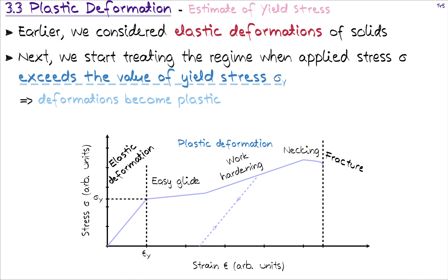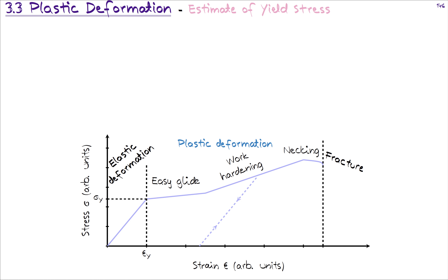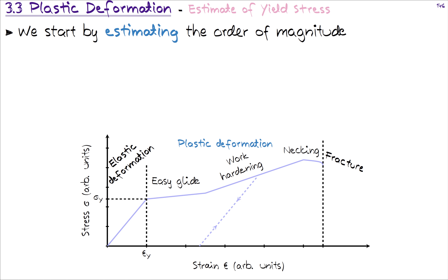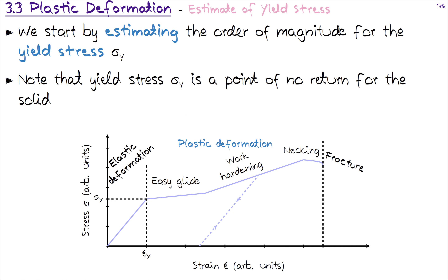The dimensions of the solid no longer return to their original dimensions when the stress is reduced to zero. What we want to do is understand how we can estimate this point of no return — the yield stress value sigma_y — because that is where we move from the elastic deformation regime into the plastic deformation regime. We want to estimate its order of magnitude and know when the transition is being made into the plastic regime.